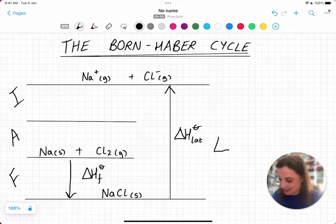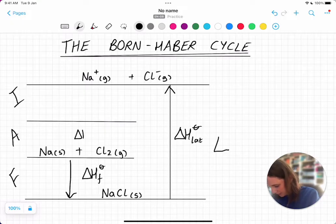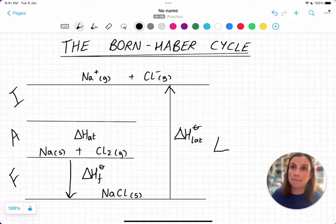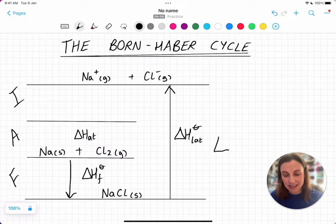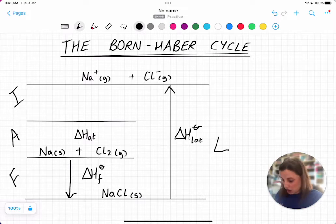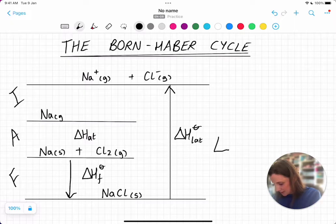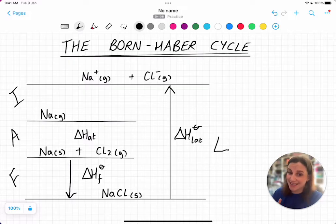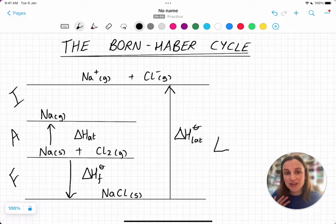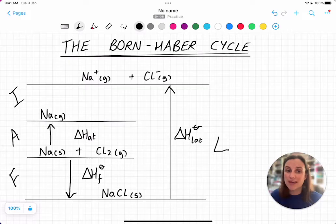The next one is delta H atomization. Atomization is the energy to go from the element in its standard states to the gaseous atoms. So for the sodium, we'd be going from sodium solid to sodium gas. Now, sometimes this is called sublimation, but it would ruin my FAIL thing. And the IB tends to call it atomization. This one wouldn't normally exist in the data booklet. So you would normally be given this value or this might be the value you're trying to find.